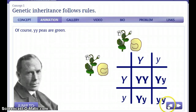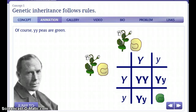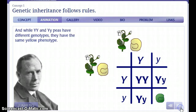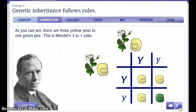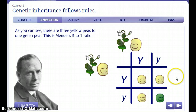Since lowercase y represents the recessive allele in peas, this pairing is green, while the phenotype for the rest of the pairings, which have at least one copy of the dominant yellow allele, will be yellow. As you can see, there are three yellow peas to one green pea. This is Mendel's 3 to 1 ratio.